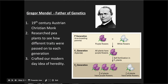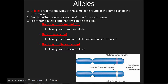We need to do a little bit of history here and talk about the father of genetics before we move into using Punnett squares. The father of genetics, Gregor Mendel, was an Austrian monk in the 19th century who researched pea plants and saw how those pea plants differed in a lot of different traits. He noticed that from generation to generation, the offspring of these pea plants that were crossed were not always the same — they had different traits, and he wondered why. This crafted our modern-day idea of heredity.